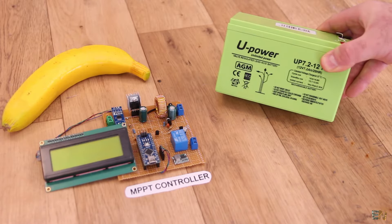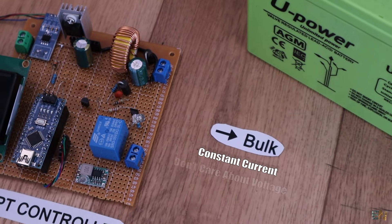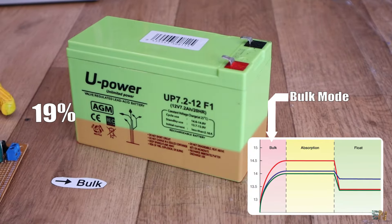This type of battery requires 3 stages of charging. When the battery is discharged, we first start in the bulk mode at the constant current that is set by the battery manufacturer. In this mode, the battery will charge up to around 80%.